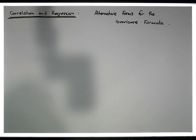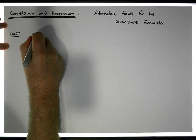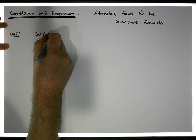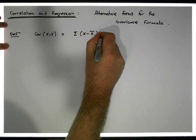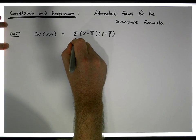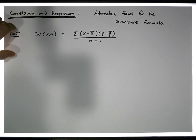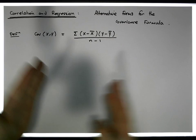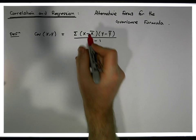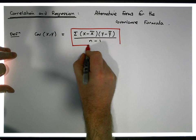By definition, the covariance of XY is equal to the sum of (xᵢ − x̄) times (yᵢ − ȳ), all divided by n minus one. This is the sample covariance we're actually calculating here. This is the first form — the definition form of the covariance — and is usually what's provided from a definition perspective.